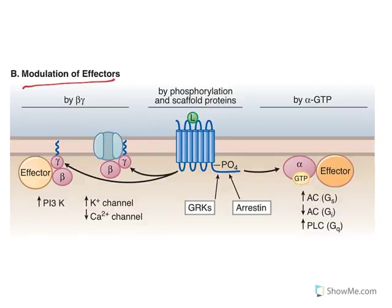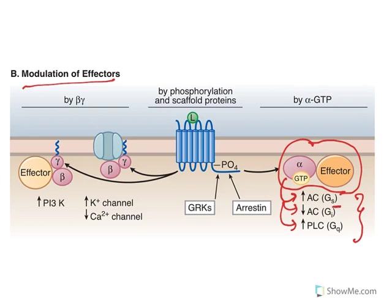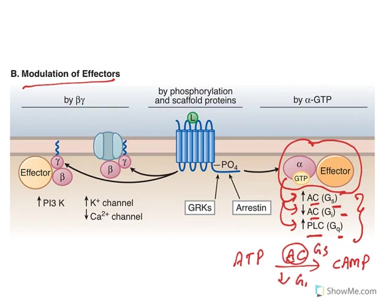Once activated, the alpha-GTP binds with an effector. Based on the activity of the alpha subunit, there are three types. The Gs type increases adenylate cyclase activity. The Gi type decreases adenylate cyclase activity. The Gq type increases phospholipase C activity. The job of adenylate cyclase is to convert ATP to cyclic AMP. So this enzyme activity is increased by Gs and decreased by Gi, whereas Gq is related to phospholipase C activity.